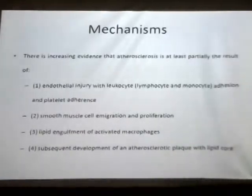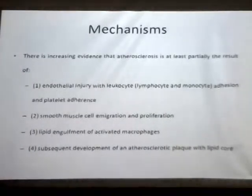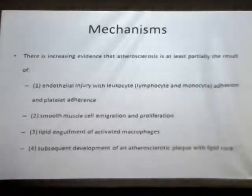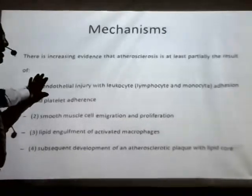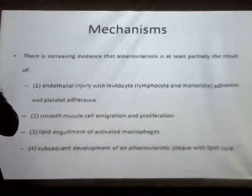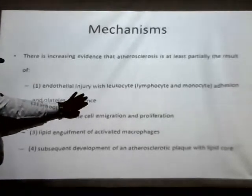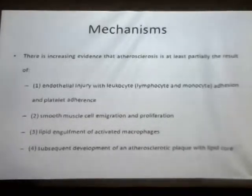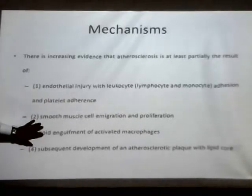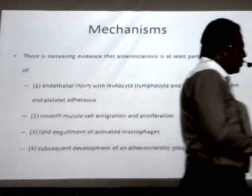To understand the mechanism of development: one mechanism is the development of fatty streak; the other mechanism involved in development of atheromatous plaque is the theory of injury. The important points related to this mechanism are endothelial injury with leukocyte adhesion and platelet adherence. Endothelial injury may occur due to hypertension or certain metabolites present in the blood. Due to the injury and adhesion of platelets at that site, it will attract smooth muscle cells, which will proliferate.